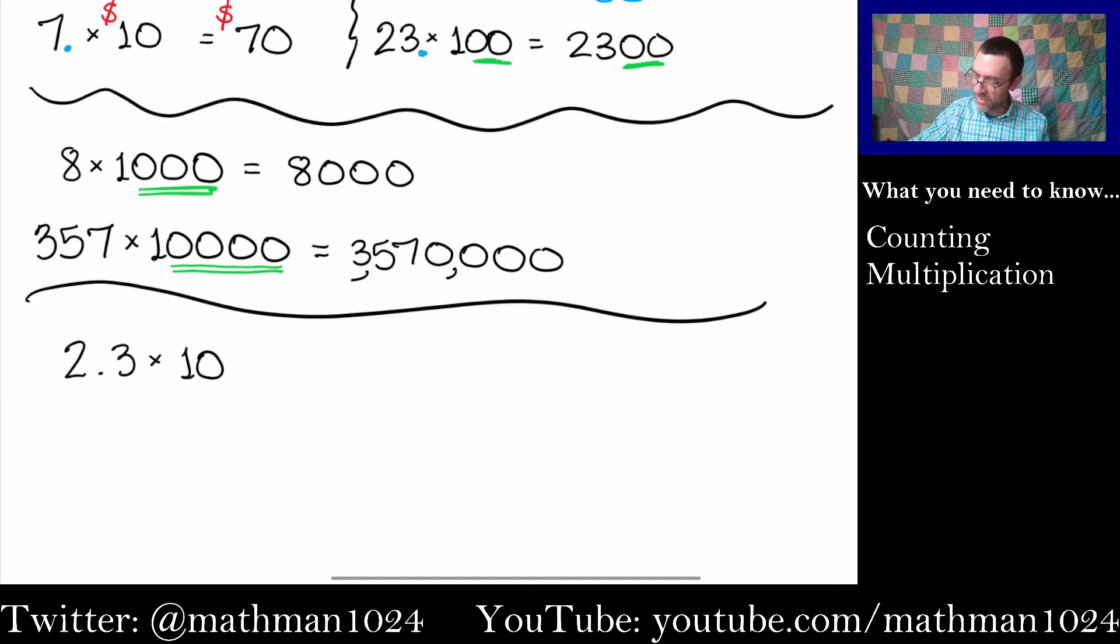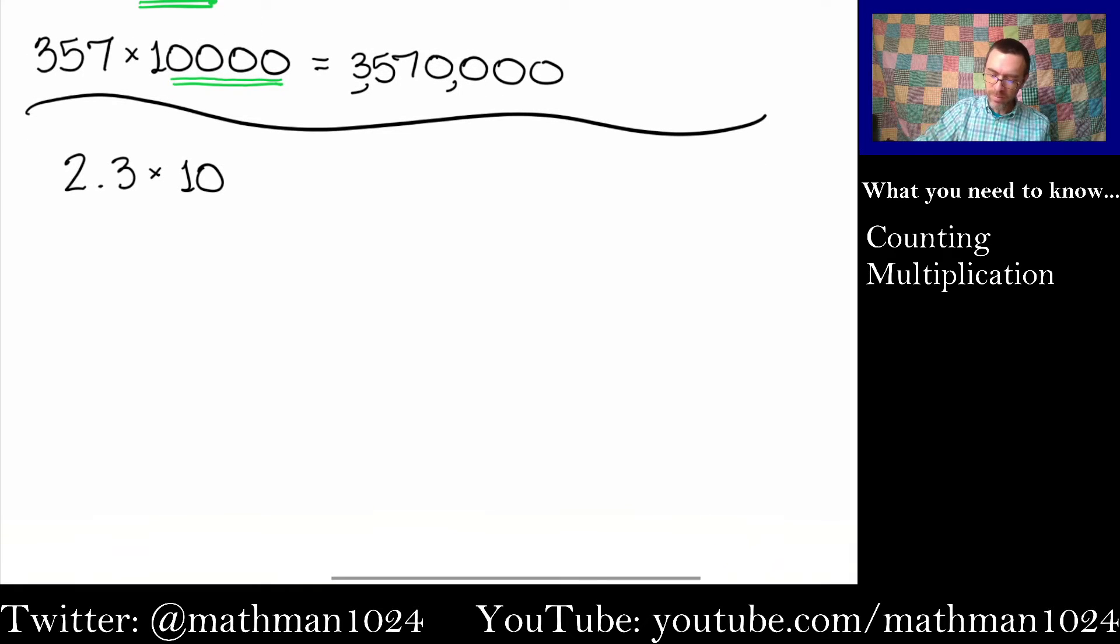So here, when I have a decimal, I have 1, 0. I want to take my decimal and move it one place to the right, which turns this into 2, 3. And again, pay attention to where the decimal was. It was here and it went one spot to the right. So this is the number 23.